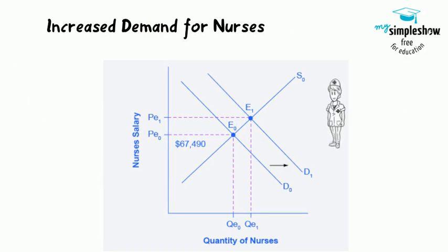Increased demand for nurses. In 2014, the median salary for nurses was $67,490. As demand for services increases, the demand curve shifts to the right, from D0 to D1, and the equilibrium quantity of nurses increases from Q0 to Q1.